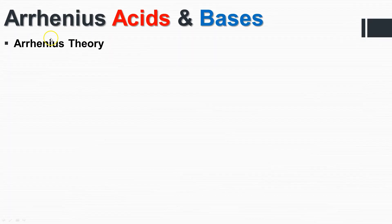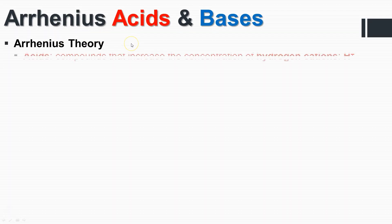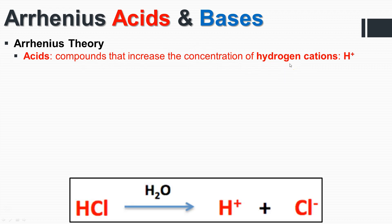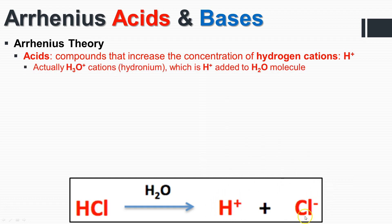So the first thing we need to talk about is the Arrhenius acids and bases. In summary, an acid is something that increases the concentration of hydrogen cations when you put it in solution. HCl dissociates to form this hydrogen proton — that cation — and the chlorine anion.